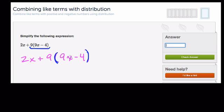Distributive property: 9 times 9x, that's 9 times 9, or 81x, minus 4 times 9, or minus 36.